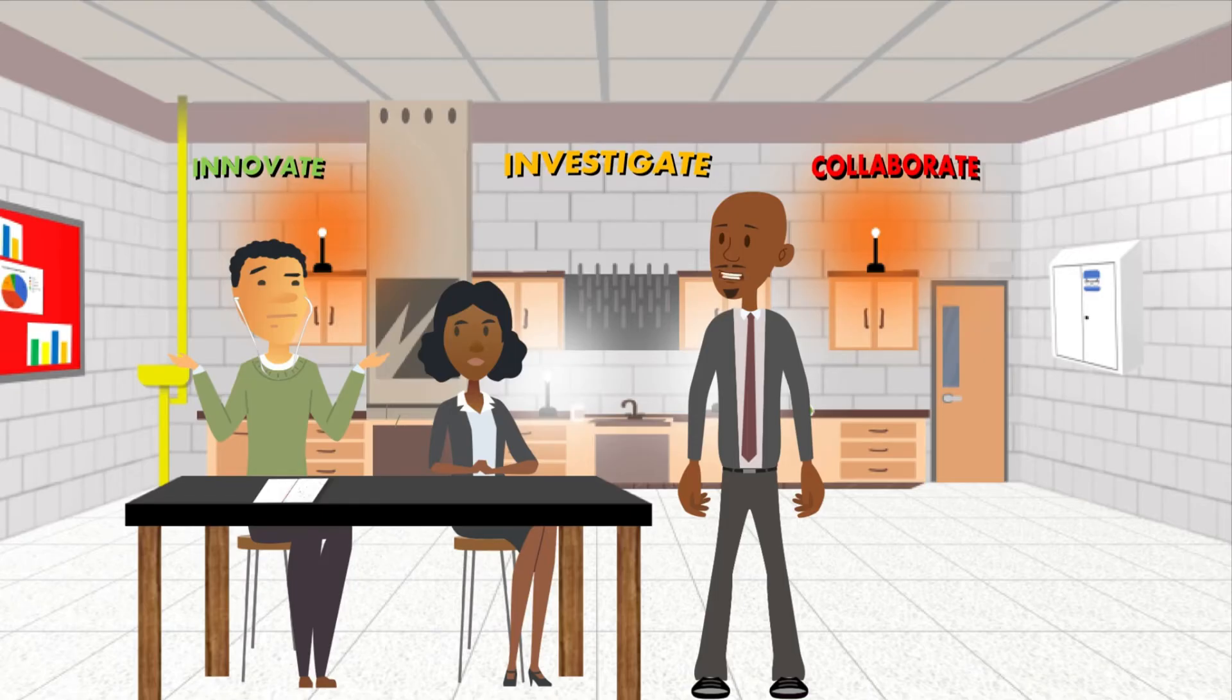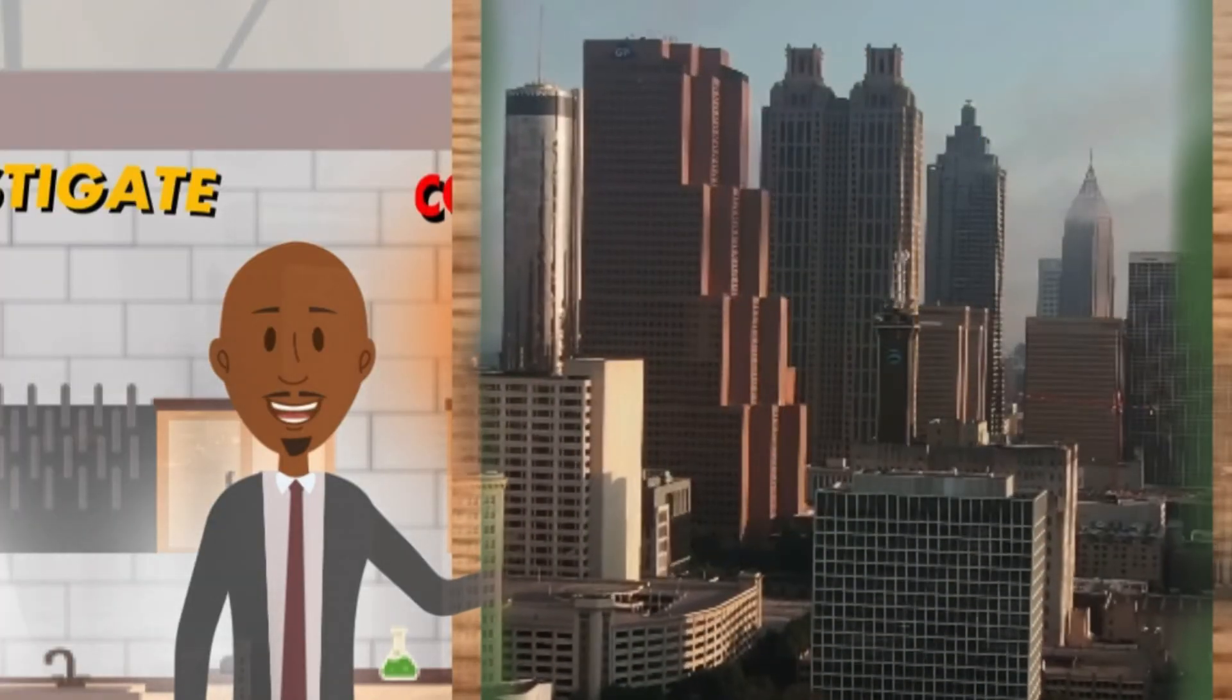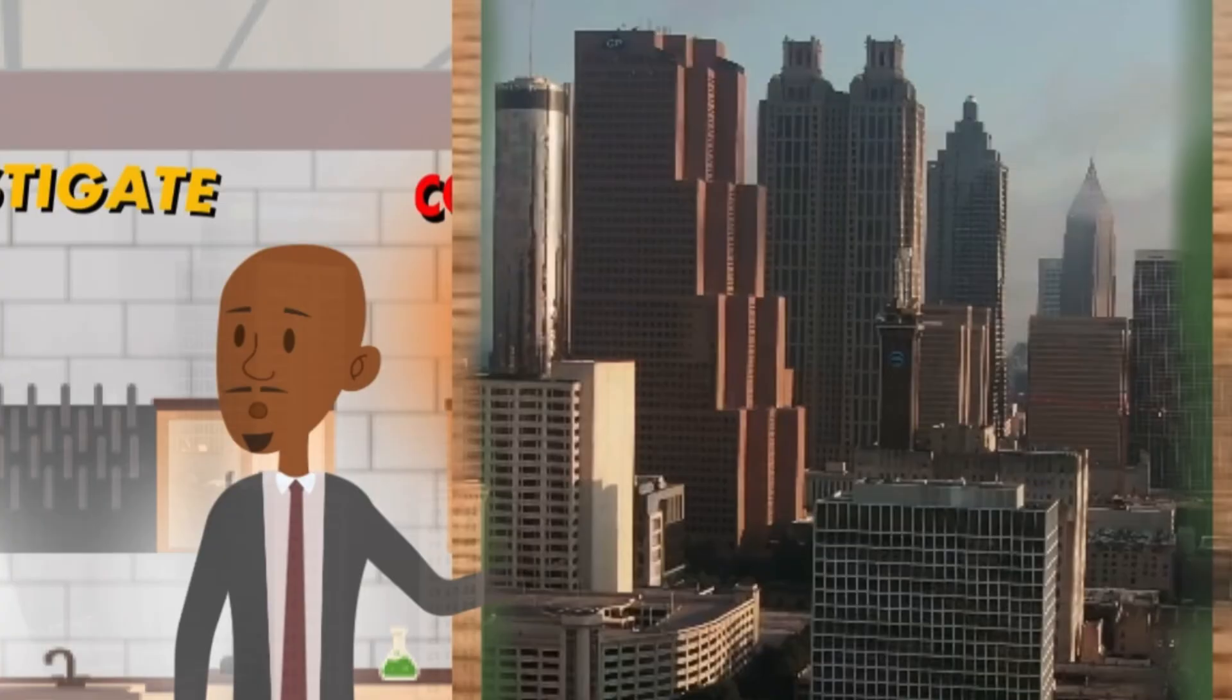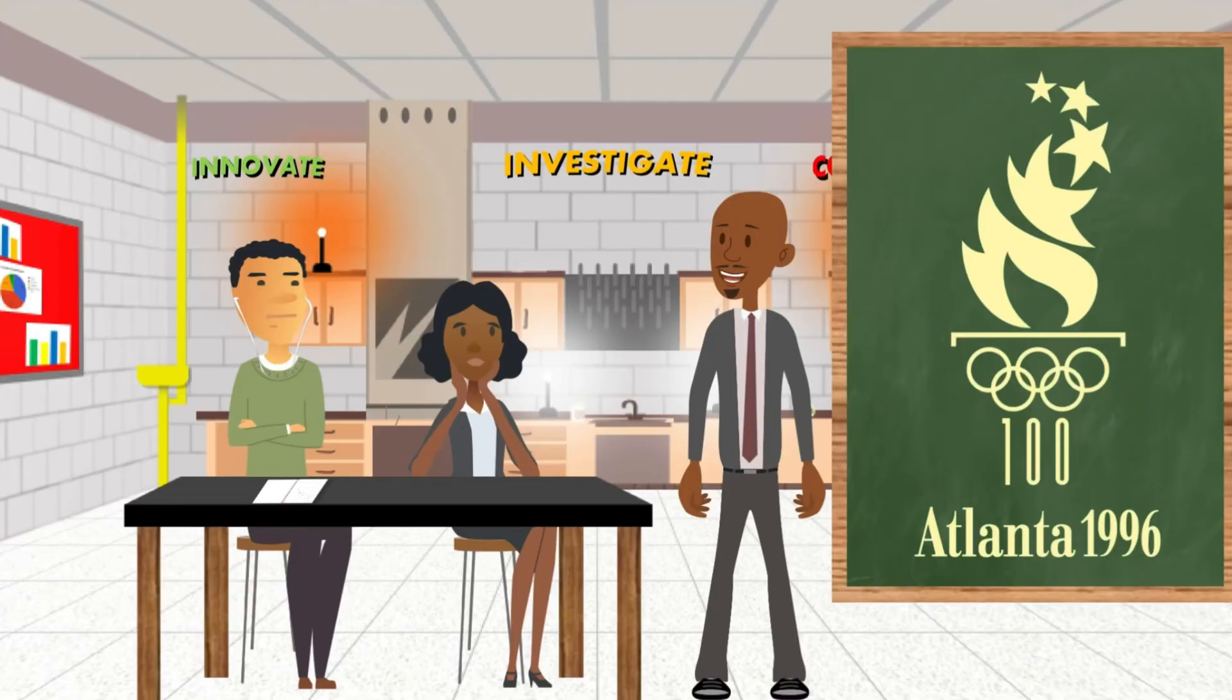Well, in 1996, Atlanta hosted the centennial Olympic games. This brought people from all over the world to our city, so we had to make accommodations on a lot of our signs and roadways to make sure people weren't confused.